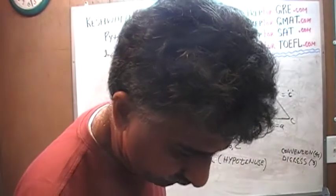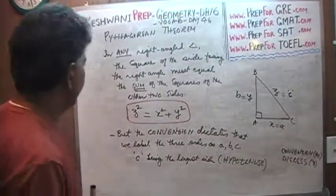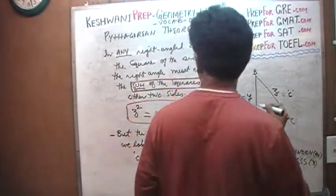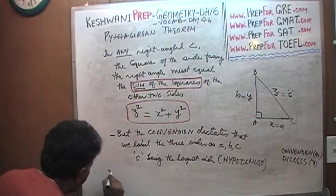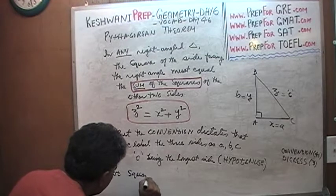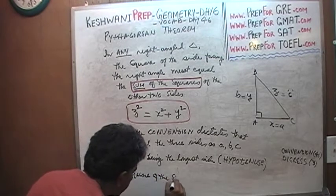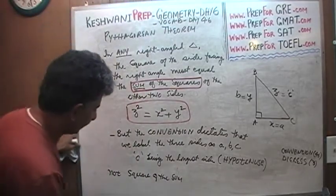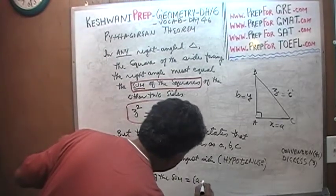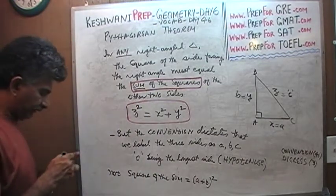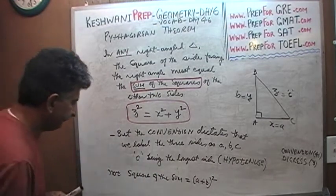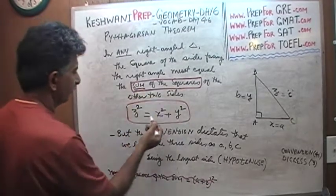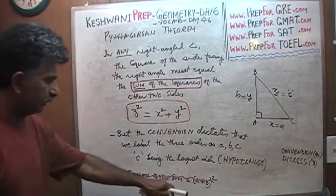Also notice: you should say 'sum of the squares,' not 'square of the sum.' The square of the sum would mean you take A plus B and square it — that is not what the theorem says. It is not the square of the sum. It is the sum of the squares. You must take the squares first, and then take the sum of the two. Those are two very different quantities.